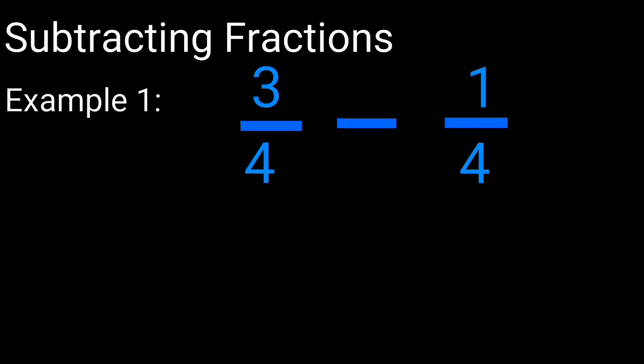Which denominators are the same numbers? Looking at the screen you see 3 over 4 minus 1 over 4. The denominators are the same number, so we're just going to go ahead and subtract the numerators. We're going to say 3 minus 1. 3 minus 1 is going to give us 2, and we still have to carry down the denominator as 4 because the two of them are the same numbers. So we're going to get the answer as 2 over 4.